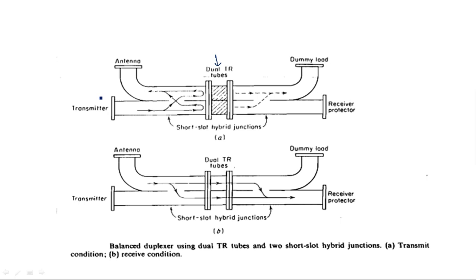This balanced type duplexer has four ports. One port is connected with the transmitter, another port is connected with the antenna, the third port is connected with the receiver protector, and the fourth port is connected with a dummy load. You can label these ports in different ways depending on the reference you use.